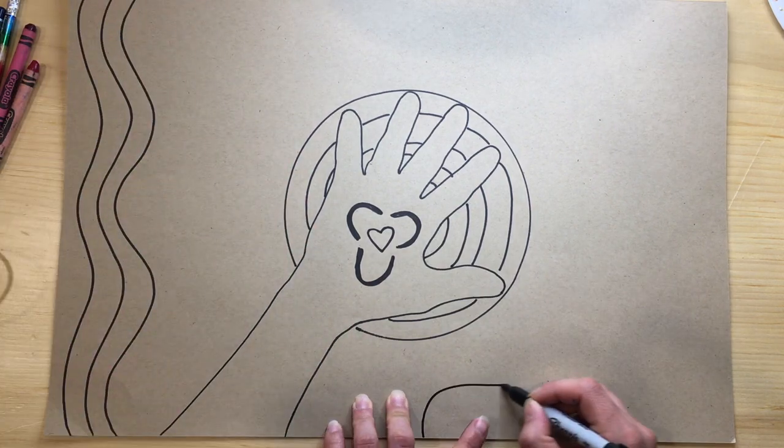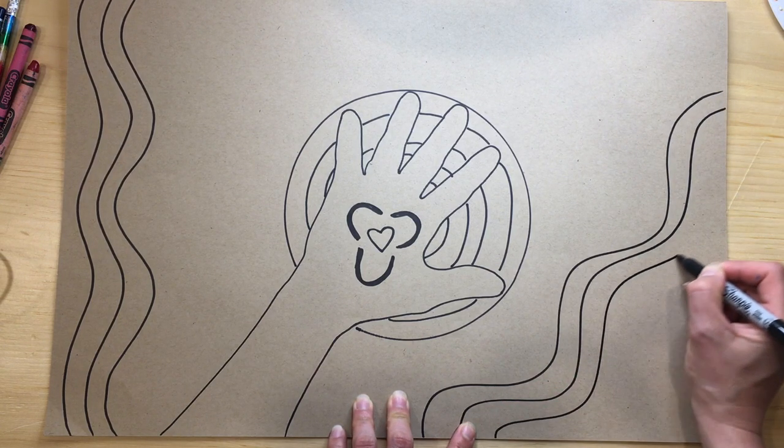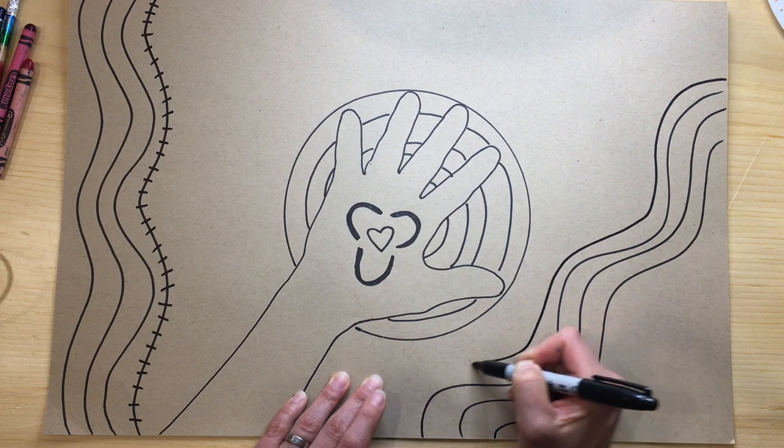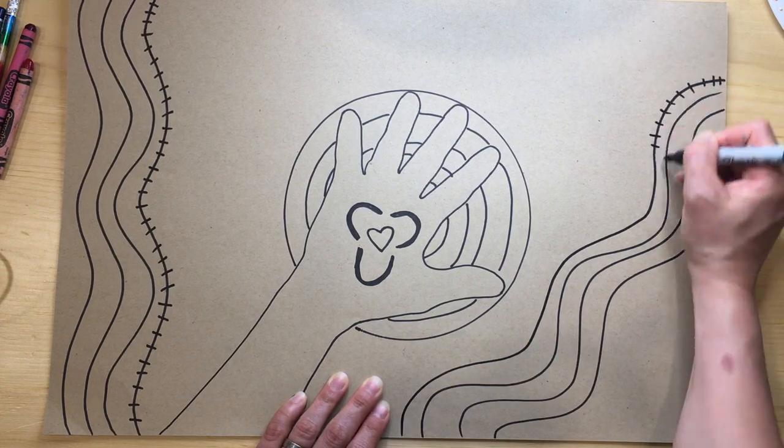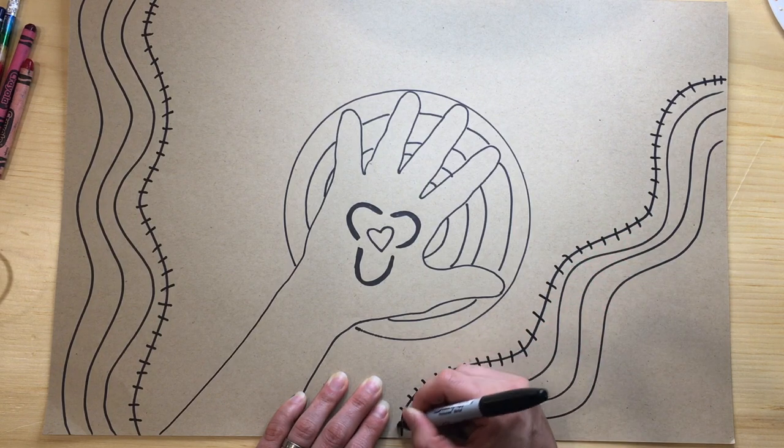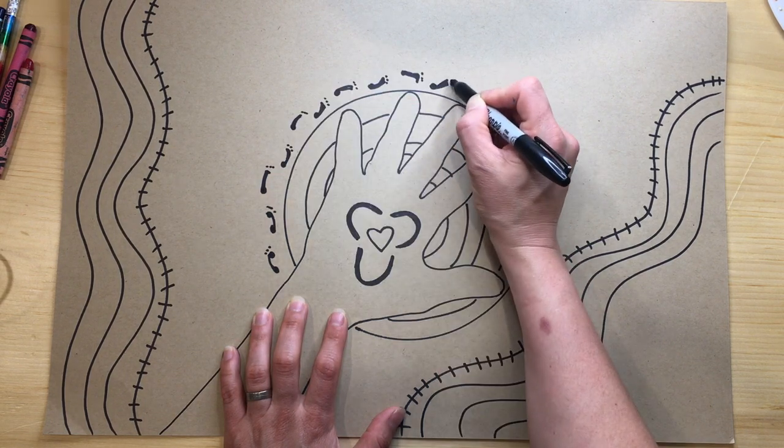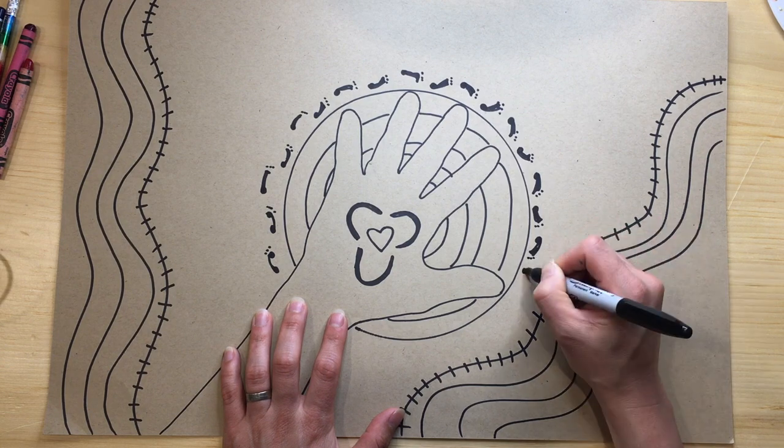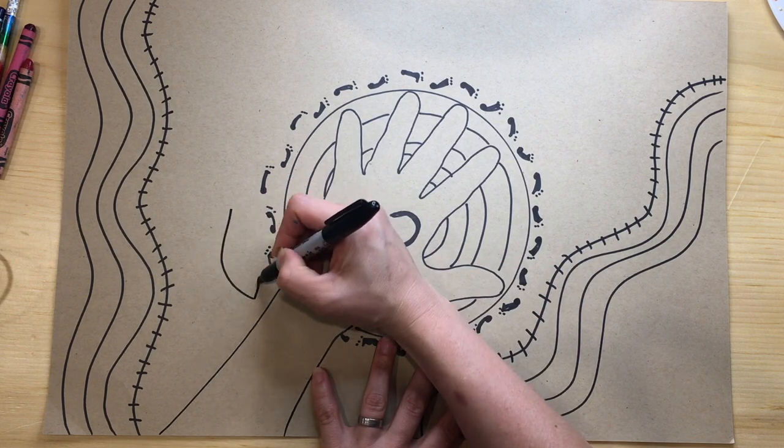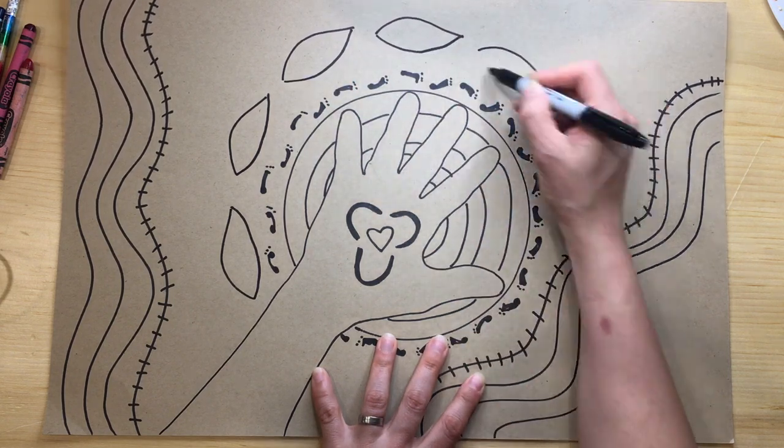I'm adding some squiggly lines to represent the Alewife Brook and the Mystic River that my house is close to. Next to them, I added a special trail with hash marks to represent the runs with our jogging stroller that my family takes and the tracks that we might leave behind. I'm drawing some footprints around my circle place for the many walks that we take around the block. I'm also drawing some leaves to symbolize all the planting I have done this spring with my daughter.